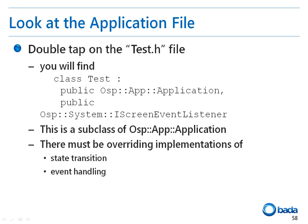Next, let's have a look at the test.h application header file. In this file, the test class is defined by inheriting the application class as well as the iScreenEventListener class to perform monitoring of the screen on-off state. You can control the application lifecycle through state transitions and handling events by implementing the virtual functions of the application class.